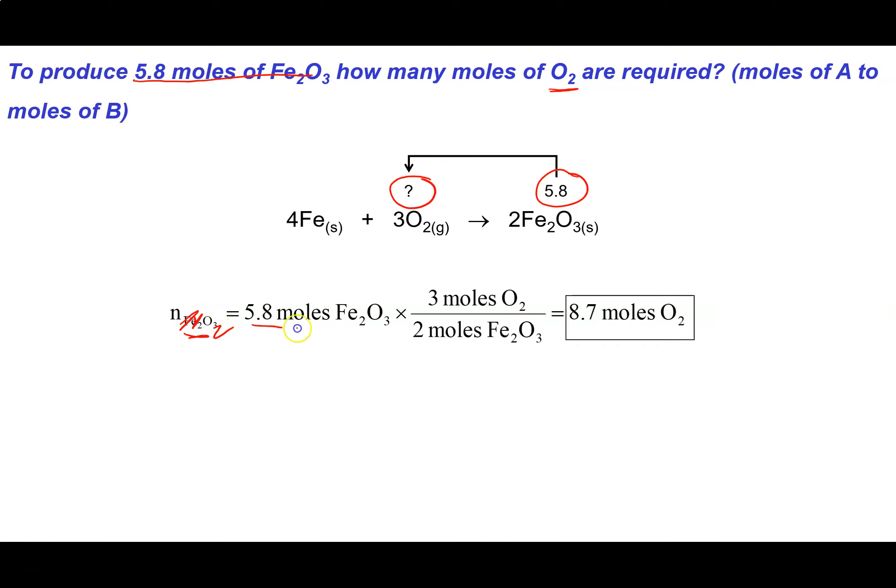We're starting with 5.8 moles of Fe2O3. And then we just need the mole ratio that relates Fe2O3 to O2. And I can see here that I get 3 moles of O2 for every 2 moles of Fe2O3. Multiply by that mole ratio. And then sure enough, it leaves me with 8.7 moles of O2.